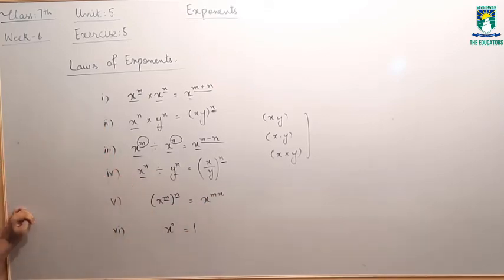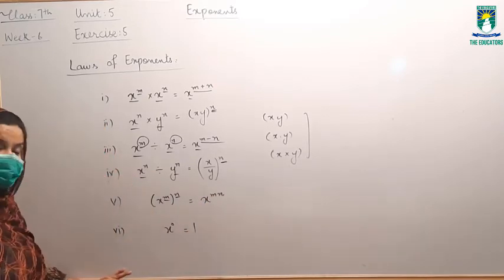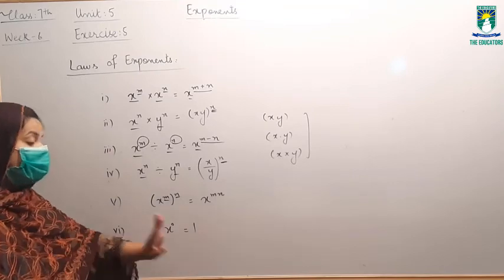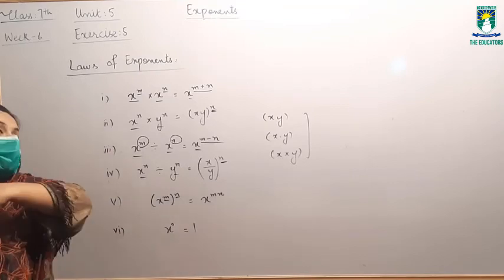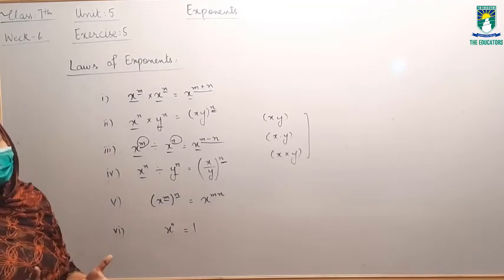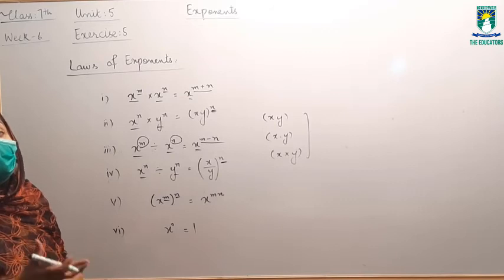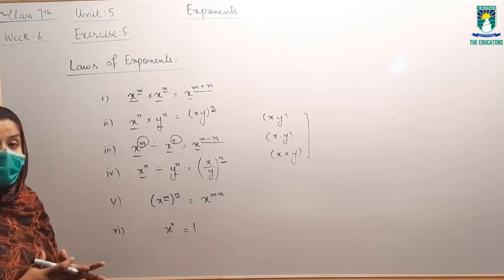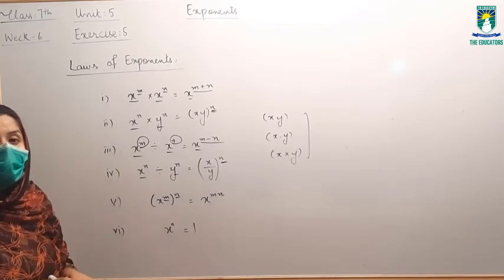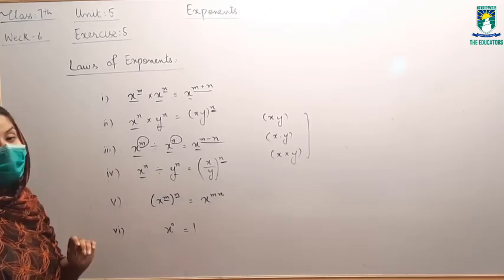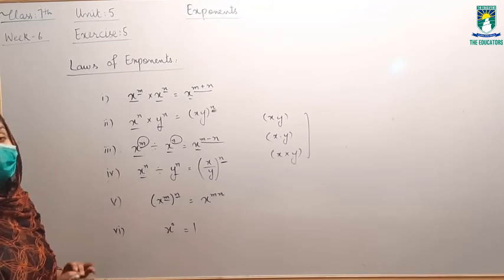Sixth law: x raised to power 0 will be equal to 1. आपके पास कोई भी base हो, अगर उसकी power 0 है, तो it will be equal to 1. So these are your six laws of exponents.